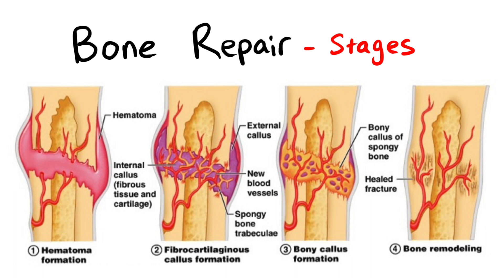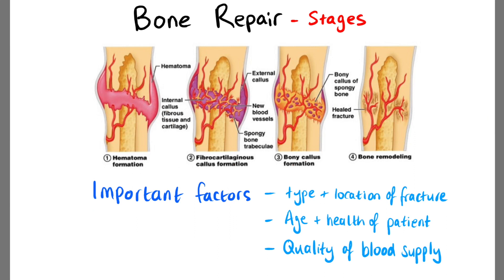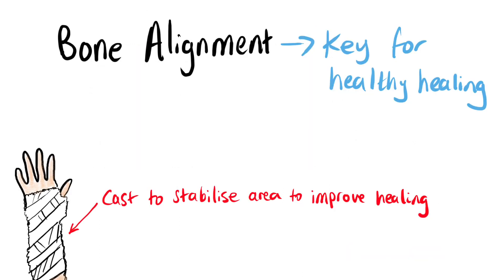The success of bone repair depends on factors such as the type and location of the fracture, the age and overall health of the patient, and the quality of the blood supply to the injured area. Proper alignment and immobilisation of the fractured bone, usually in the form of a cast or surgical fixation, are crucial for successful healing.